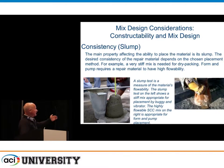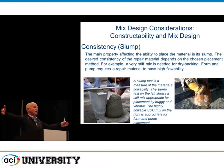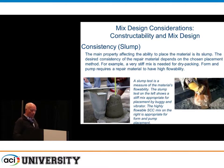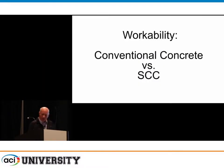Slump — everybody's seen the slump cone. We measure slump; it's a stiff mix. Today we have self-consolidating mixes where instead of slump, you measure spread — how big a diameter circle it makes, maybe 26, 27, or 28 inches. That material was invented about 20 years ago by the Japanese, and we're using it today for a lot of repair work. It's revolutionized repair.